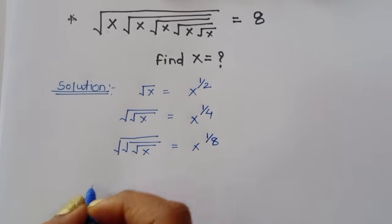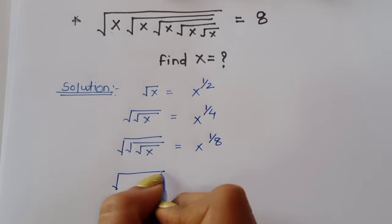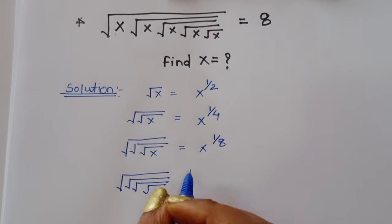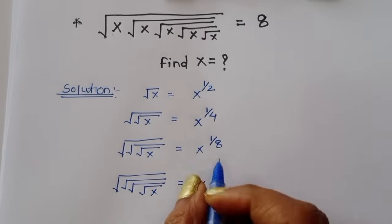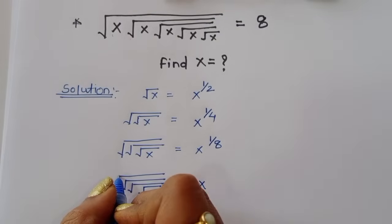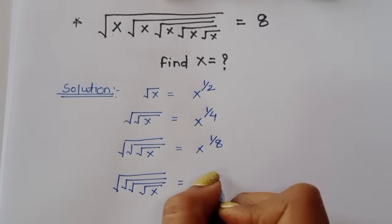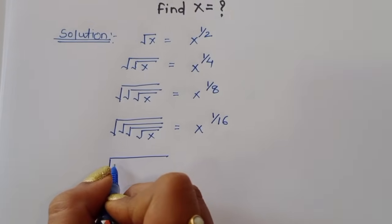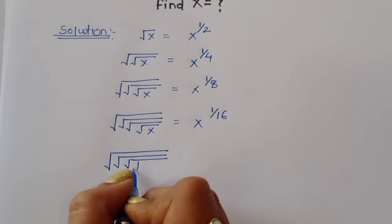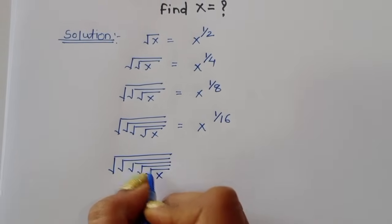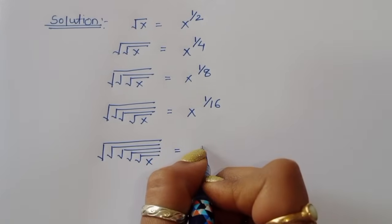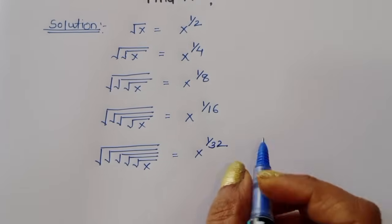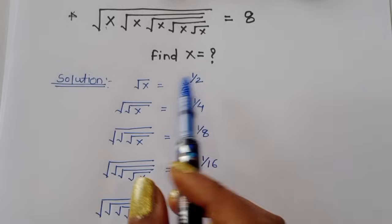For four nested square roots of x, we get x power 1 by 16. And for 5 times nested square root of x — 1, 2, 3, 4, and 5 — we get x power 1 by 32. This is the value of each nested square root term.